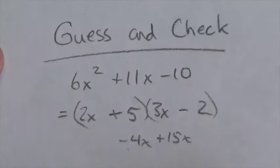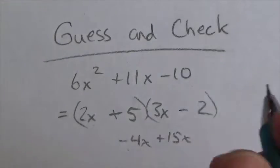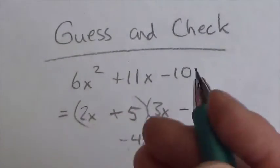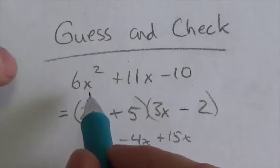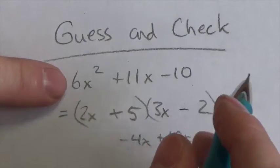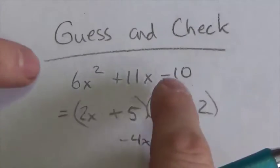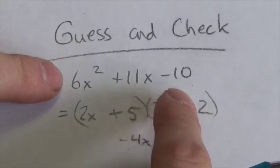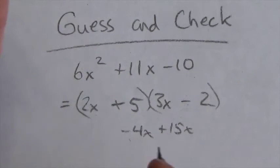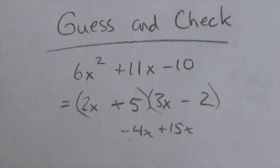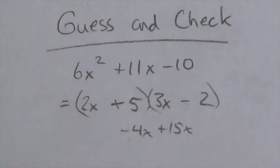Guess and check can actually work quite well and can be a very efficient method the more comfortable you are with it — it just takes practice. One of the benefits of this method is that in high school, the numbers you're working with aren't going to be crazy big. They'll be relatively small, which means you won't end up with that many choices. And as I've shown, you can eliminate some obvious choices that don't make sense, narrowing it down to only a small handful of options. This can be a very efficient method of factoring.